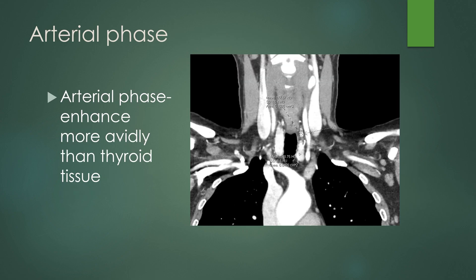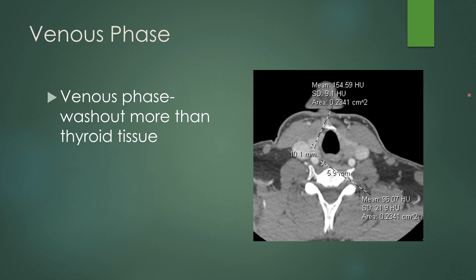In the arterial phase, you would like to see the nodule enhance more avidly than thyroid tissue. On this coronal example, you can see the arrow pointing to the parathyroid adenoma — the Hounsfield units of the adenoma are higher than the Hounsfield units of the thyroid tissue itself. On the venous phase of imaging, you would like to see the nodule wash out more than the thyroid tissue. On this example, the mean Hounsfield units of the nodule are 96, whereas in the thyroid it's 154 Hounsfield units. That is the classic appearance of the adenoma.